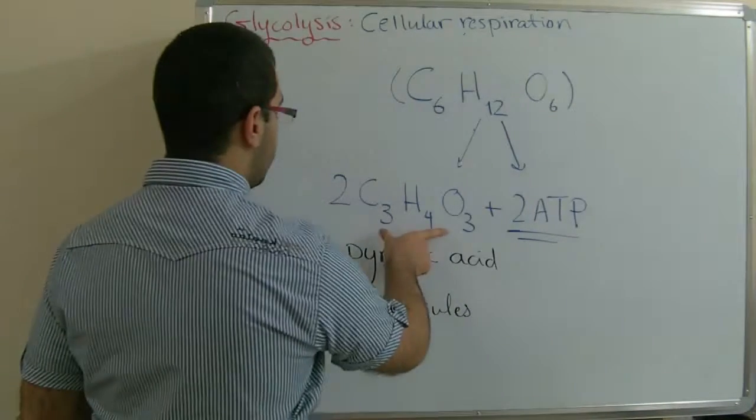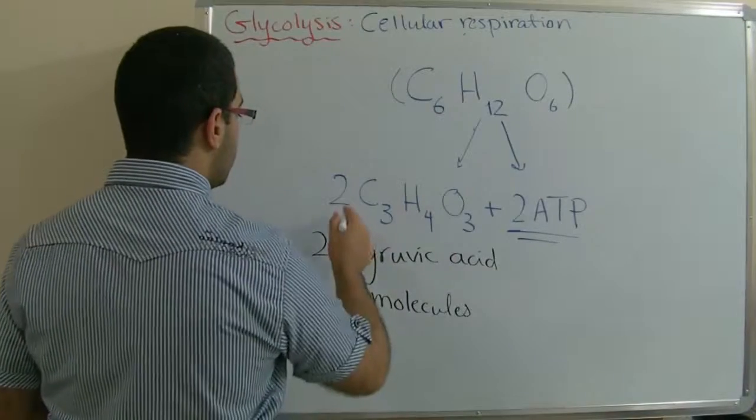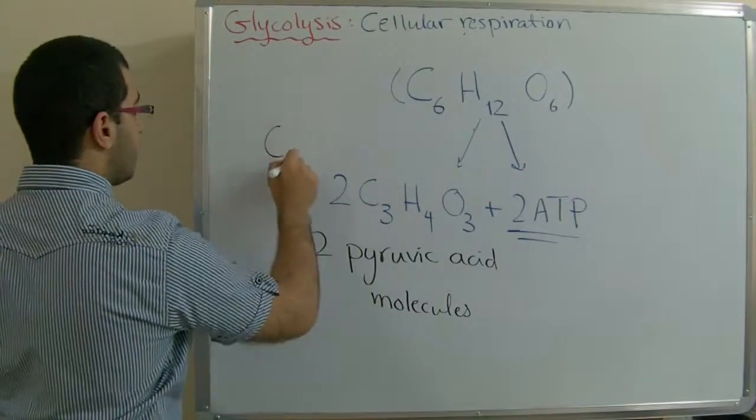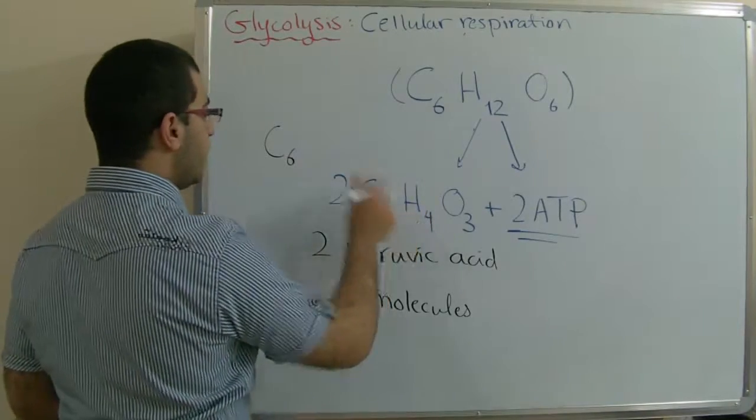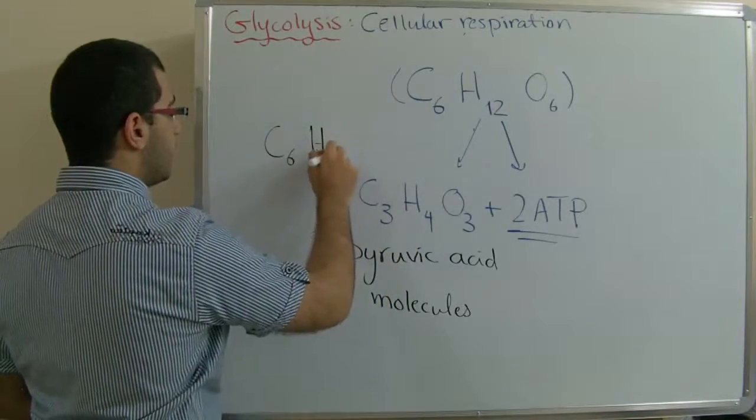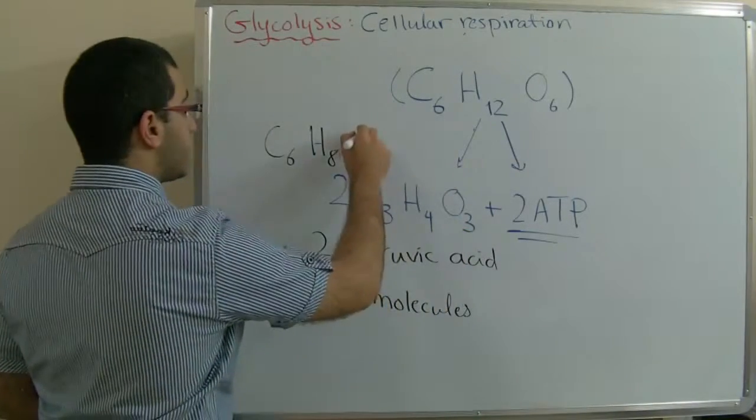If we calculate the number of molecules or atoms here, 2 by 3, we get 6 carbon atoms. H is 8, 2 by 4, and 2 by 3 is O6.